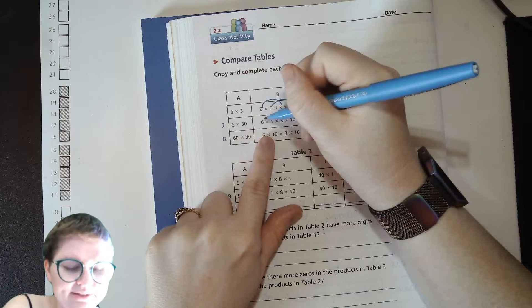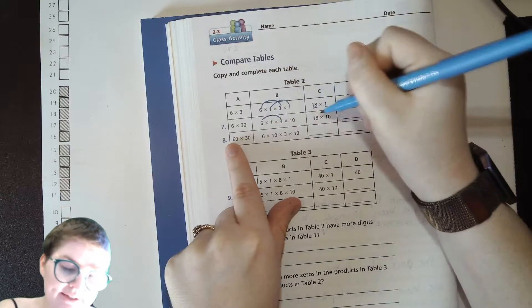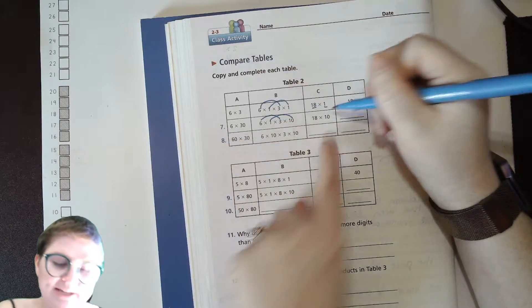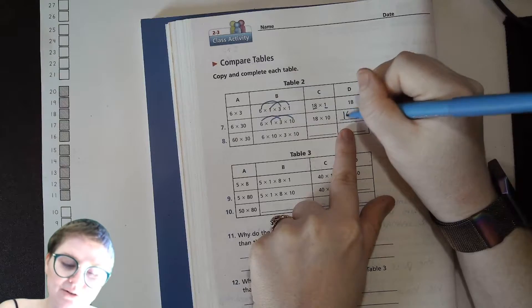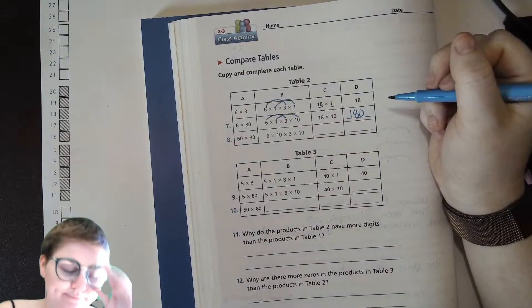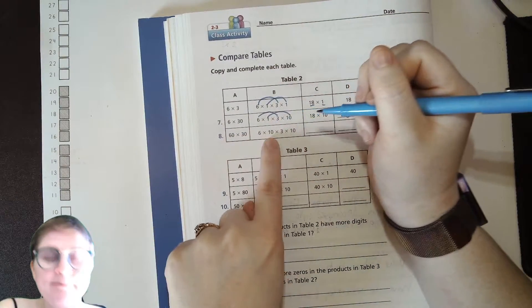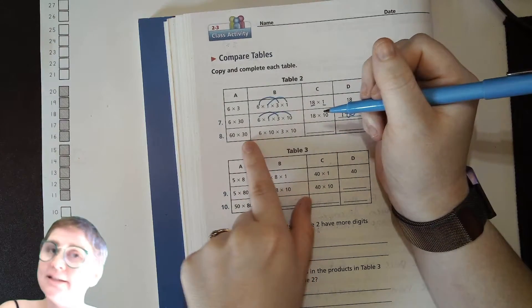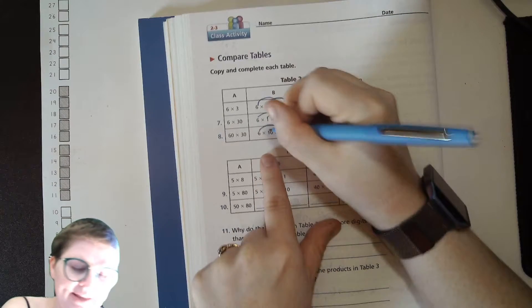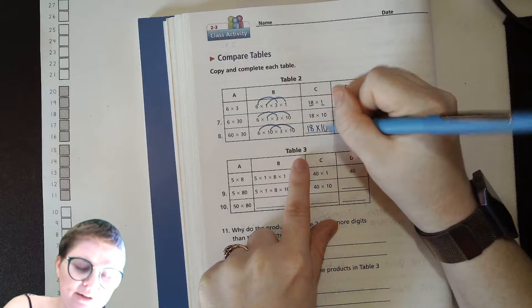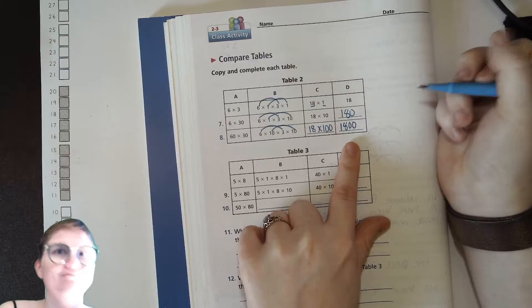Now six times thirty. Six times one is six and three times ten is thirty, so six times three is eighteen and one times ten is ten. So then our product will be one hundred eighty, eighteen tens, right? Sixty times thirty. Six times three is what, still eighteen. Ten tens is one hundred. Eighteen hundreds is eighteen hundred, right?